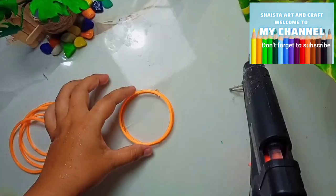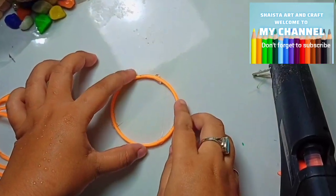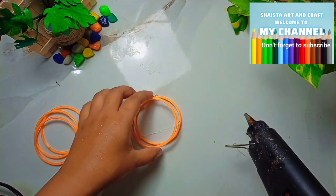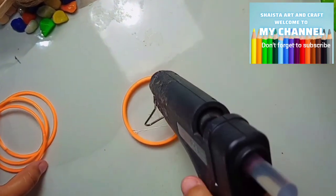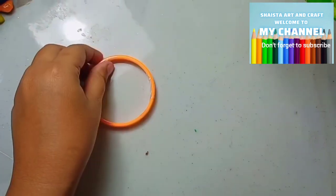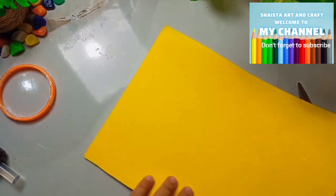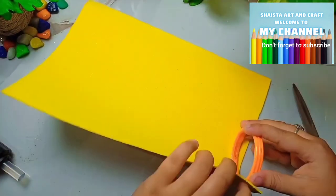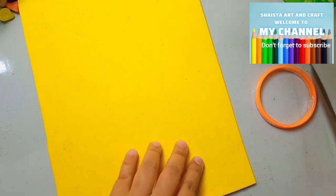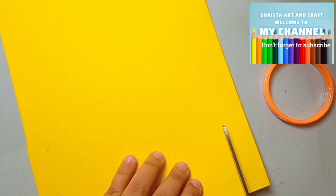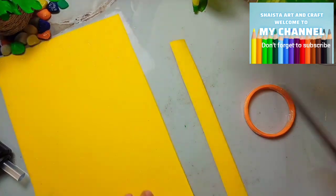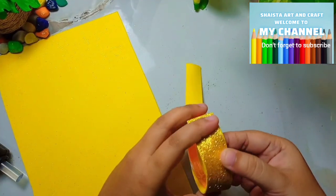Then I have three bangles. I will paste it nicely in the glitter sheet. I will cut it in the same way, then paste it on the bangles and paste it on the craft.